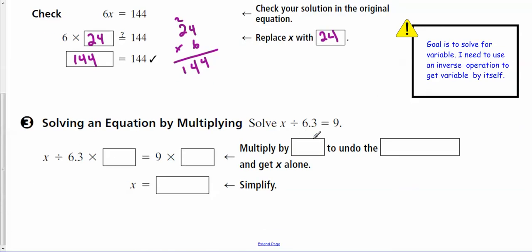So let's try this one. Solving an equation of multiplication. So we've got x divided by 6.3 equals 9. Now, sometimes I just kind of forget what does this really look like? So x divided by 6.3 equals 9. So rewriting the division problem like this,